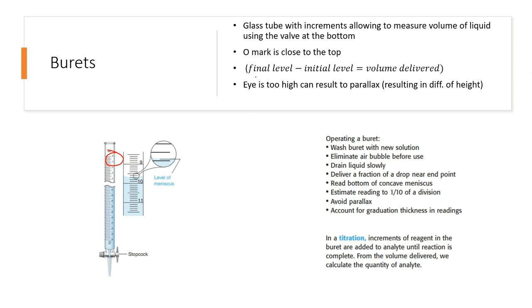To measure the volume being delivered, you need to measure the final level minus the initial level. The final level, what I mean by that, is after you dump out the liquid in the buret, that's your final level. This is the volume being dumped - after being dumped. Initial level is what you started - hence the name initial level. That tells you the volume being delivered. However, if the eye is too high, it can result in parallax. Parallax happens when there's a difference in height, whether your place is too small for your eyes or too high.